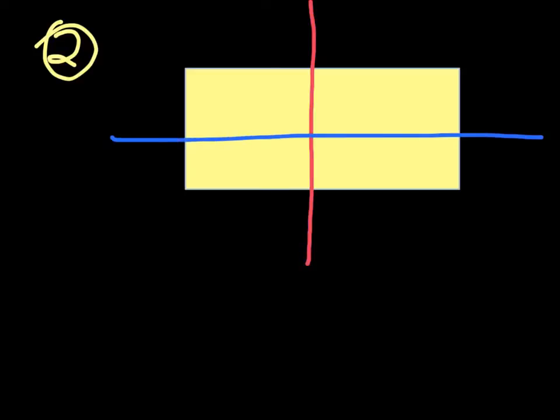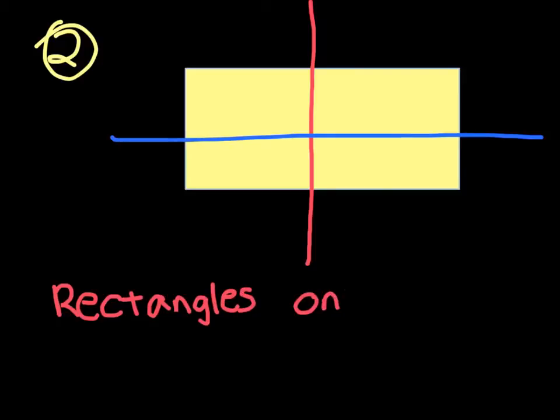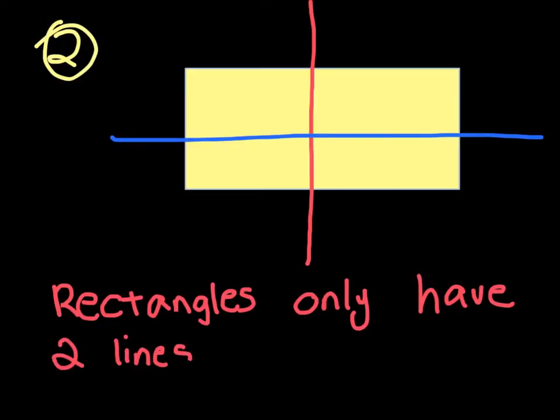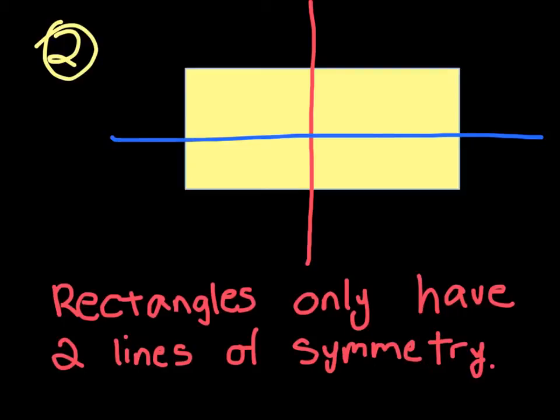Our next shape is going to be a rectangle. A rectangle has similar rules to a square, so I'll draw out the lines of symmetry for a rectangle: one, two. Those are the only lines of symmetry that a rectangle has. So the rule for rectangles is that rectangles only have two lines of symmetry.